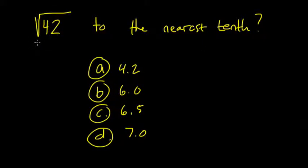Okay, so let's say you're given a problem like this, which says find the square root of 42 to the nearest tenth, and you're given four choices.